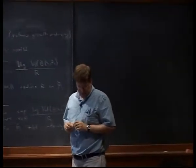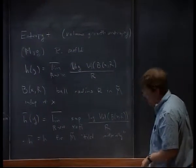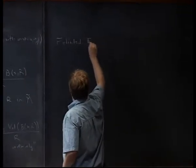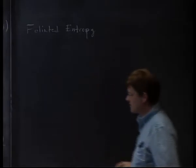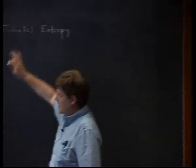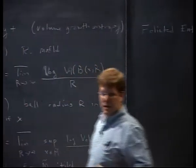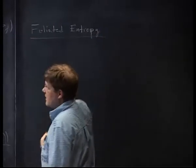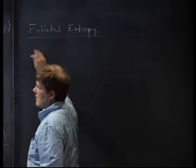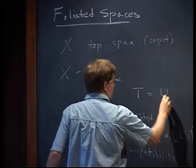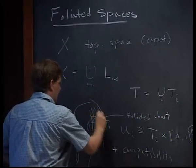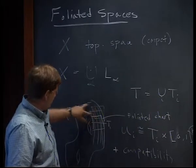Now I need to define a couple more things before stating the main theorem. The foliated version of entropy is a notion I want to assign globally to the space — an entropy that reflects the entropy of the leaves but is a global average. For that, I first need a measure on the global space. Given a transverse measure, each of these T_i's form a global transversal when put together.